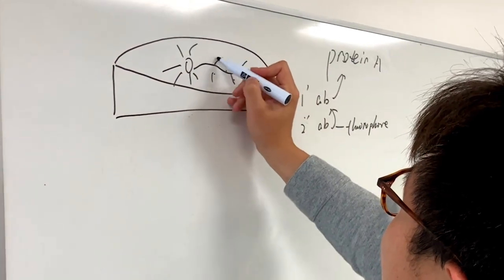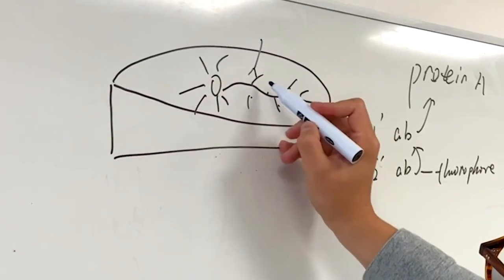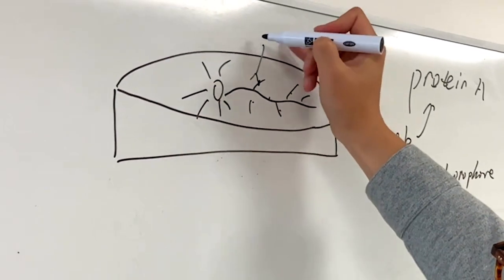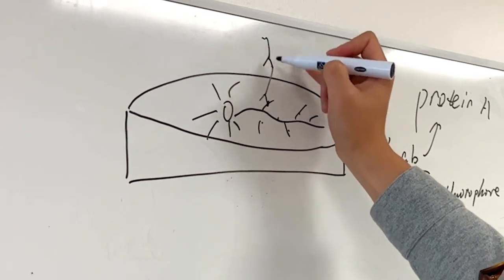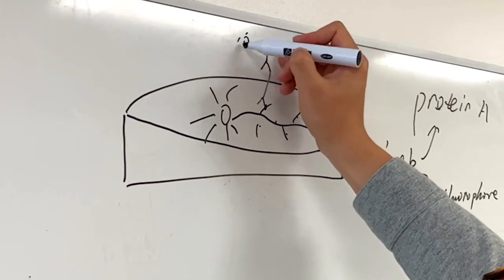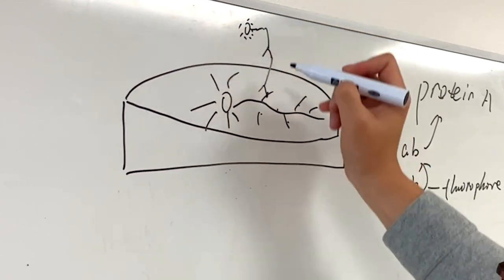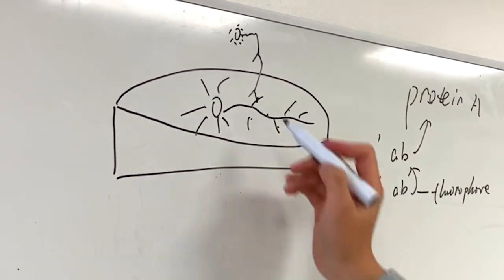So in this case, the primary antibody finds the protein A, and the secondary antibody finds the primary antibody and is attached to fluorophore. So with this fluorophore, we can visualize this protein A.